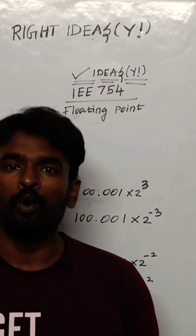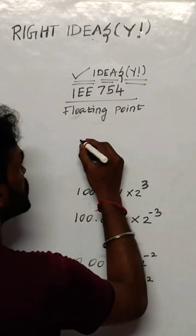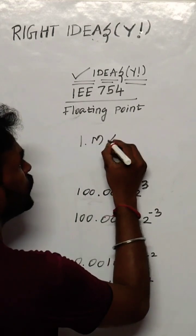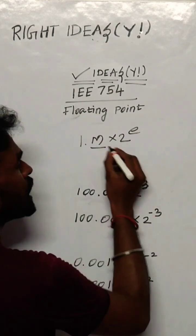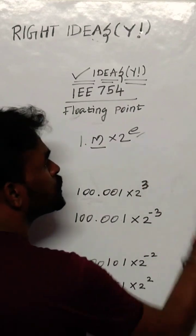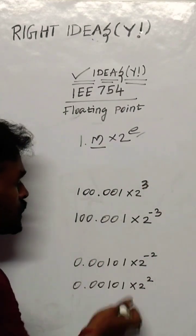Define IEEE 754 floating point representation. It can be represented by 1.M × 2^E. M stands for mantissa bit, that is fraction bit. E stands for exponent, that is power. So let's examine it.